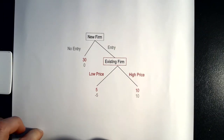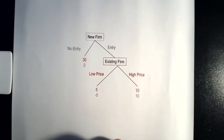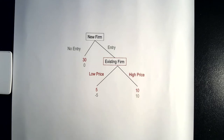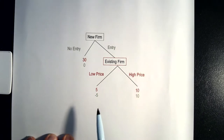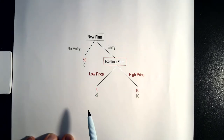Let us consider a sequential game. A sequential game is between two or more players, and before one player moves, the player can observe the action of the other player or players. In this case we have two firms: a new firm that is about to enter the market — may or may not enter — and we have an existing firm.